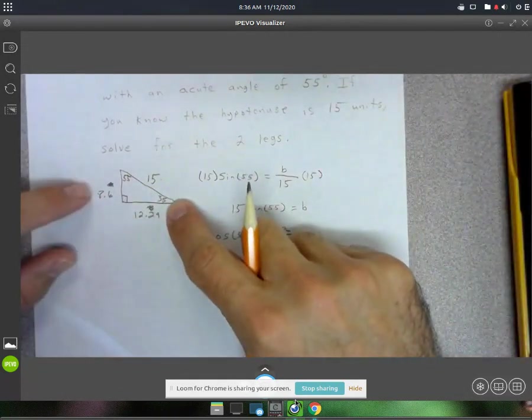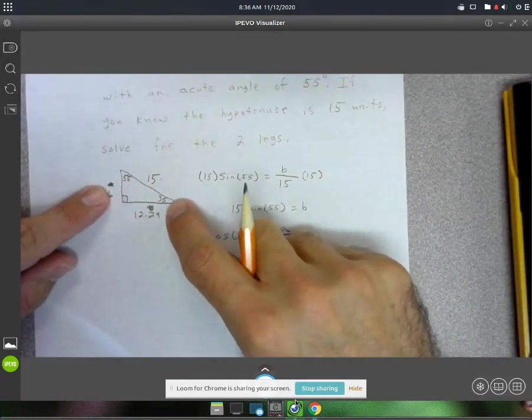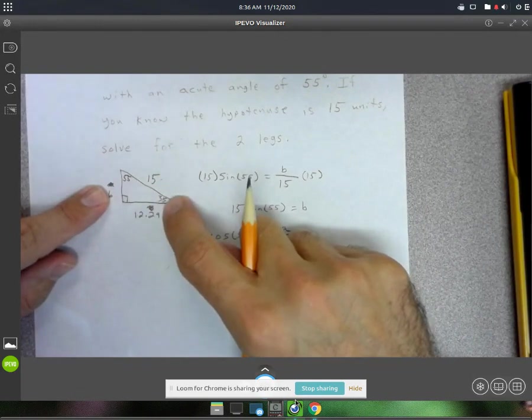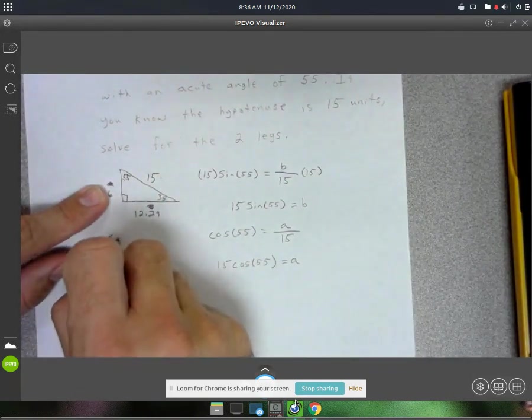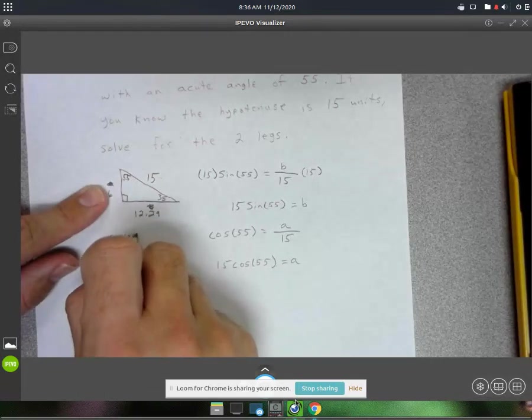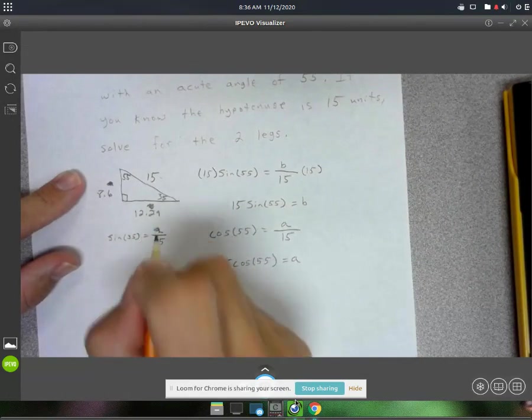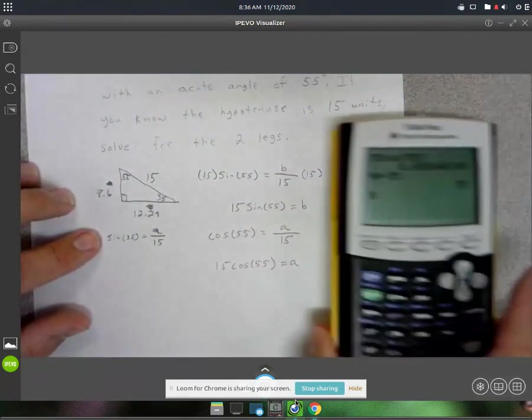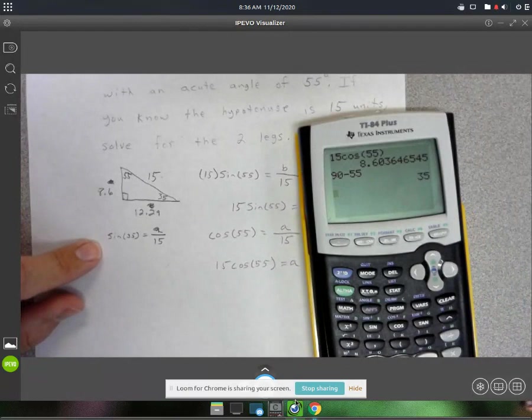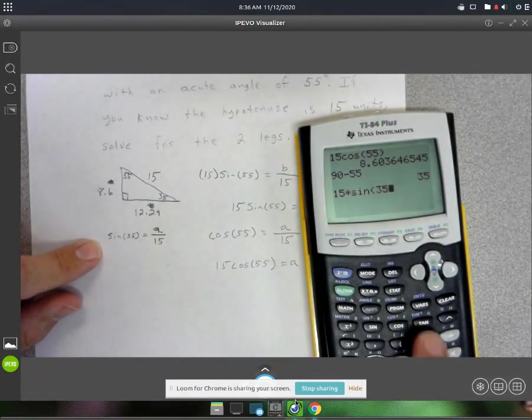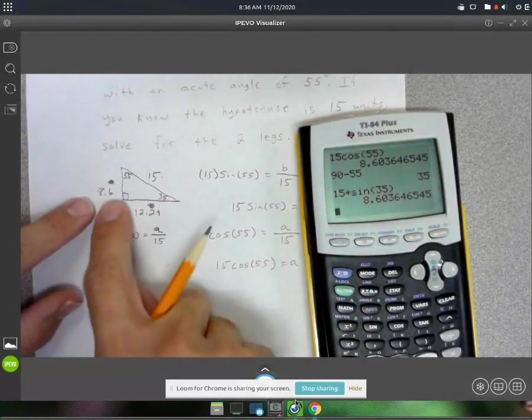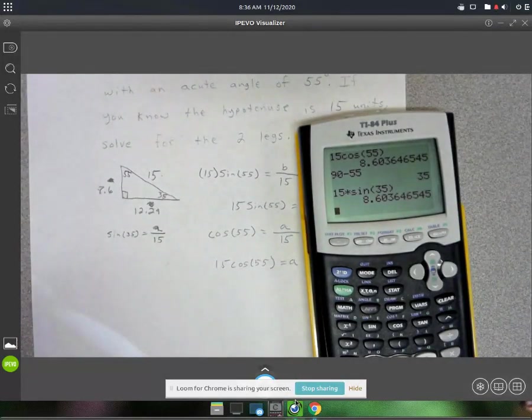And then to solve for this side over here, you could have used sine of 35. You could have said sine of 35 equals A over 15. And that would give us the same answer—times by 15 here. 15 times sine of 35, and you would have got the same answer. Lots of ways to do these.